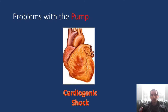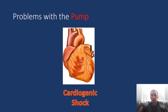This brings us to the different types of shock as different parts of that triangle get interrupted. First, you could have problems with the pump. When you have a problem with the pump directly — the heart — that's called cardiogenic shock. Things that cause this include a heart attack, cardiomyopathy, arrhythmias, or a mechanical problem with one of the valves — valvular heart disease.